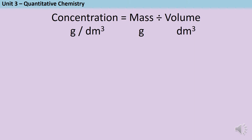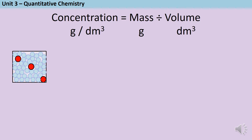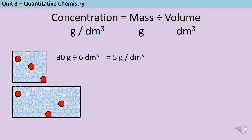Let's look at one of these solutions. Let's say that these solute particles weigh 10 grams each, so I've got a total mass of 30 grams of solute, and this box contains 6 decimetres cubed of liquid. So to calculate concentration, I do 30 grams divided by 6 decimetres cubed, which gives me 5 grams per decimetre cubed. If I had a box that was twice the size but still had the same amount of solute dissolved in it, then my concentration would be 30 divided by 12, giving 2.5 grams per decimetre cubed. So by doubling the volume, I've halved the concentration.